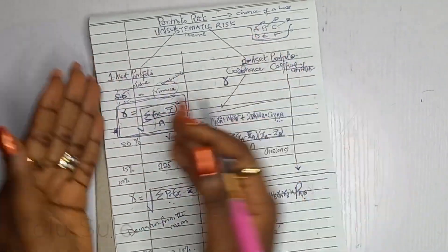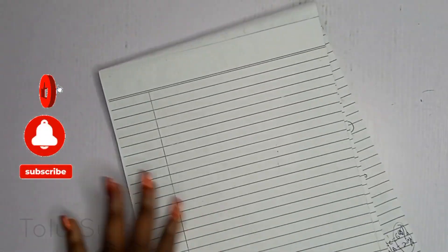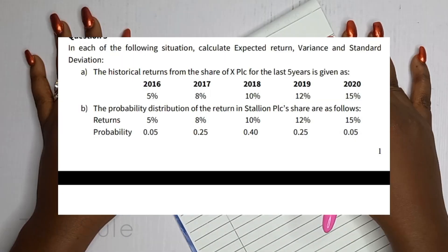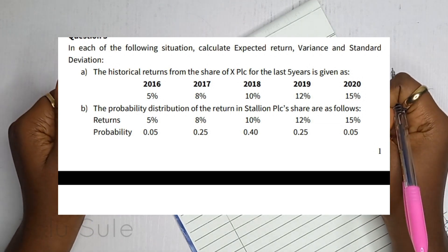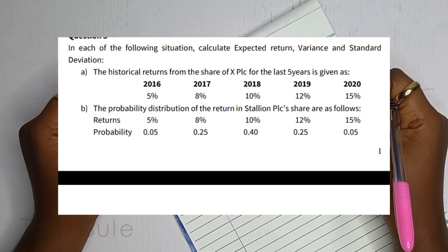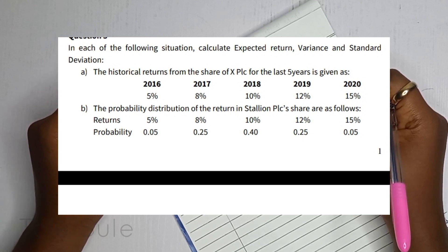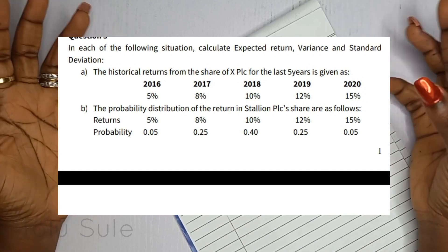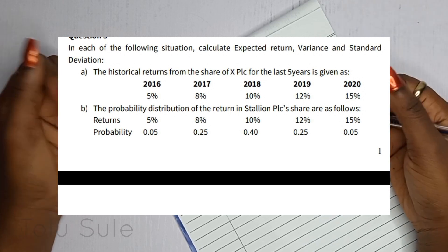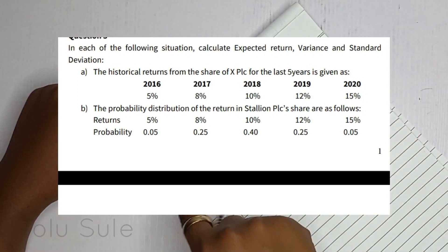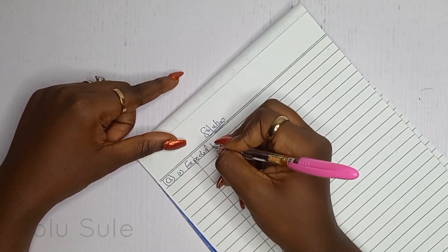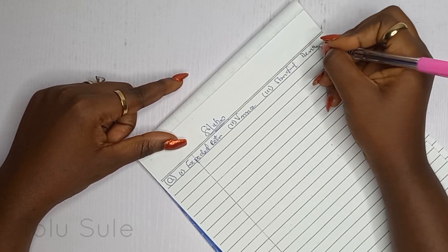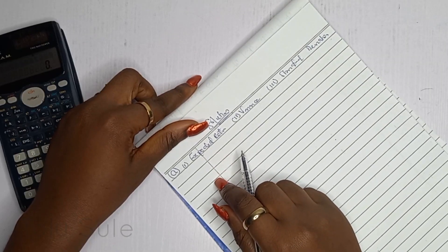Let's now solve a question on portfolio risk demonstrating one-asset and two-asset portfolios. The first question asks you to calculate expected return, variance, and standard deviation for two situations. Situation A is historical — returns given for 2016 through 2020. Situation B is probability-based, which is futuristic data. For Situation A, the first thing to calculate is expected return, then variance, then standard deviation.